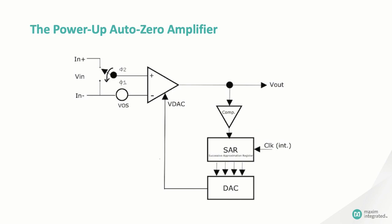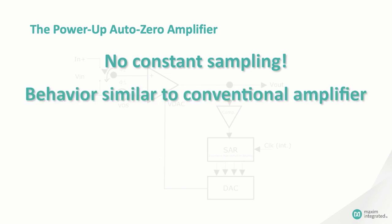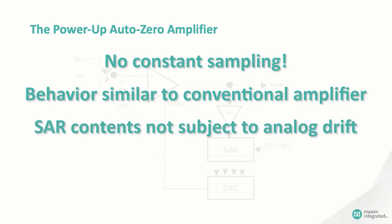If the DAC output is higher than the input voltage, the bit is cleared. Otherwise, it stays set. And when all the bits of the SAR have been tested this way, the SAR contains the closest digital approximation possible to the input voltage. Now, that's kind of what happens in a power-up auto-zero amplifier. On power-up, control circuitry shorts the inputs and a successive approximation register drives a DAC that feeds back to the correction input on the amplifier. When the SAR has tested every bit, the DAC contains a code that corrects the amplifier for input offset, and the short can be removed.